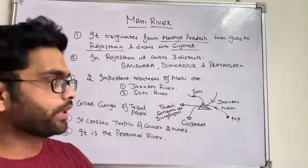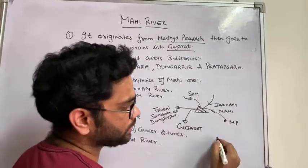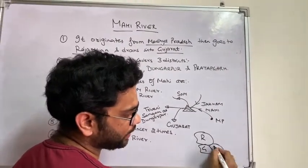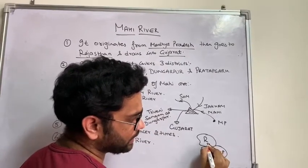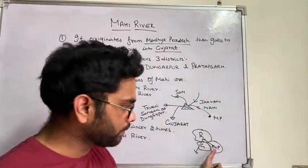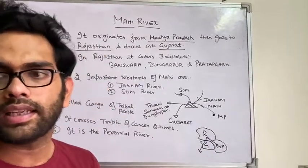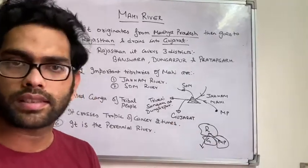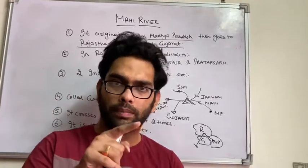The Mahi river originates from Madhya Pradesh, then it goes to Rajasthan, and then it goes to Gujarat. These are the 3 important states where the Mahi river passes. When the Mahi river enters the state of Rajasthan — as shown on the map — the southern part comprises 3 districts.